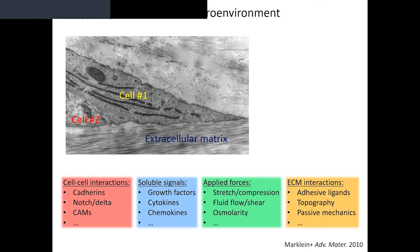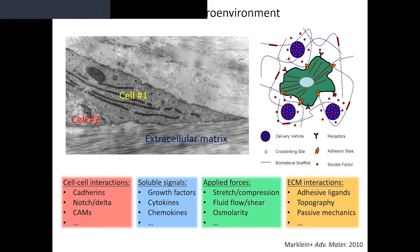One approach many people take is to use synthetic materials that are much simpler, where we can engineer in specific functionalities, features, and signals to answer what those signals do for cell response. The general approach is to take something fairly simple — a polymer backbone like polyethylene glycol — and then add in individual functionalities like a certain adhesive ligand, certain mechanical properties, or certain growth factors, to answer questions about what those different cues do for cells.